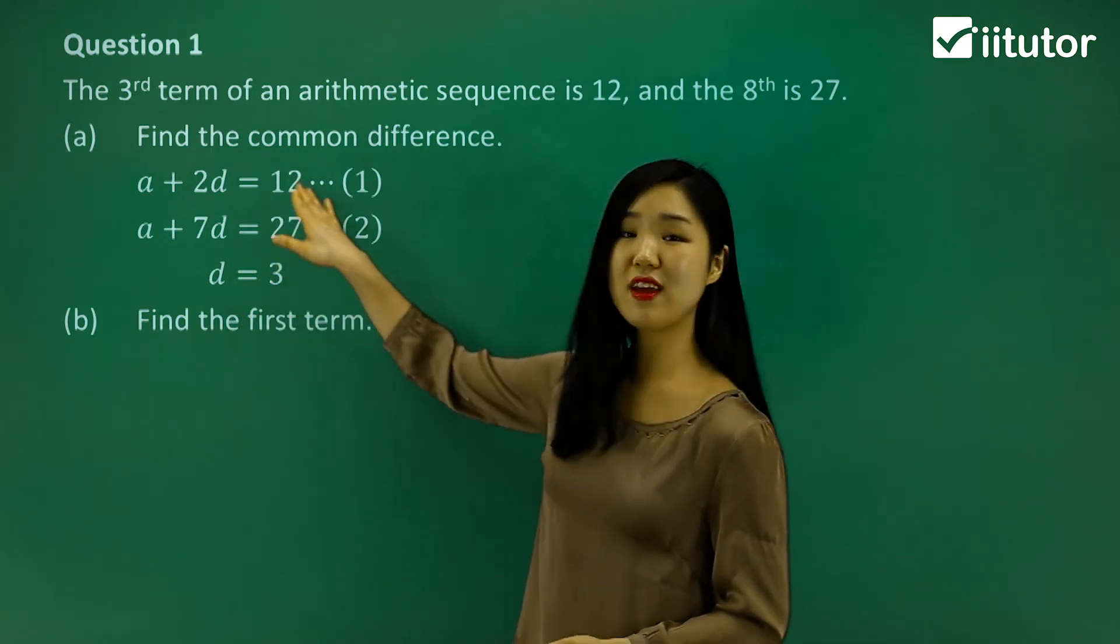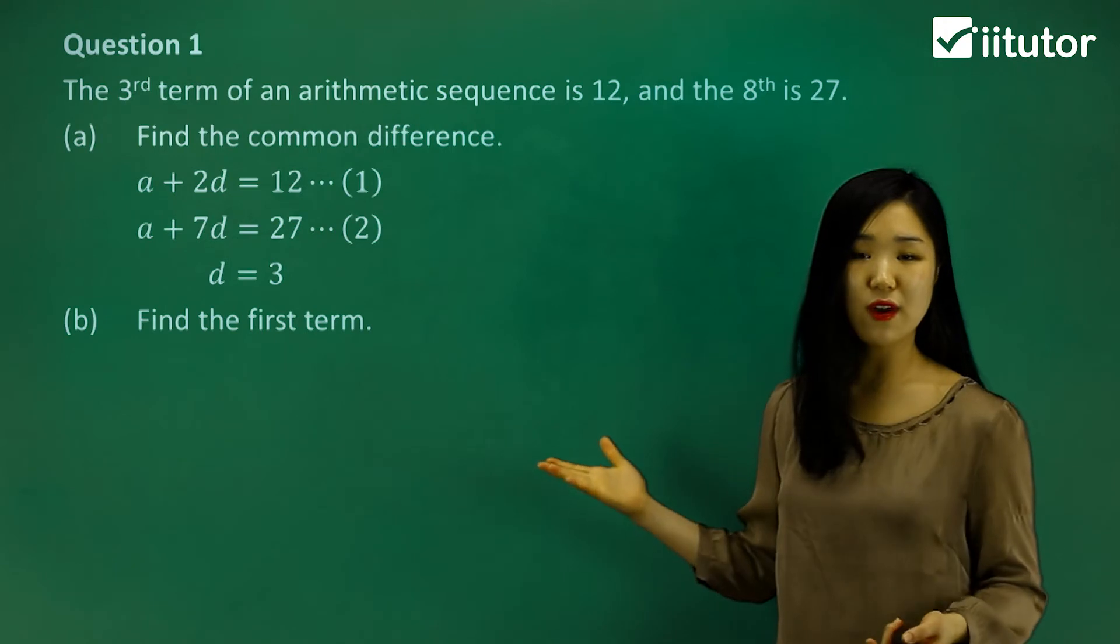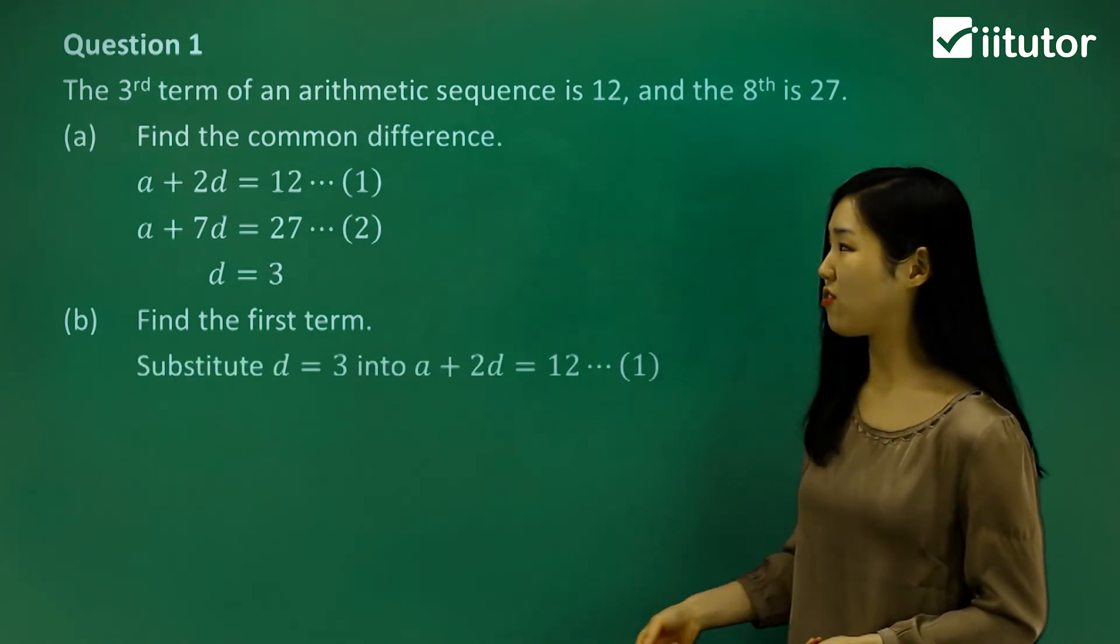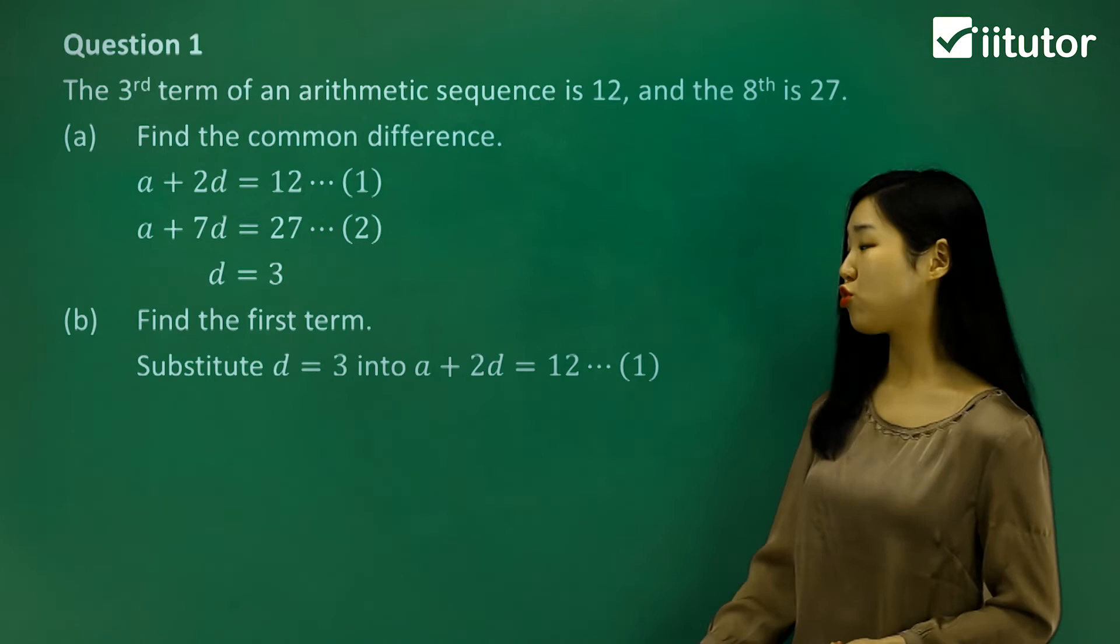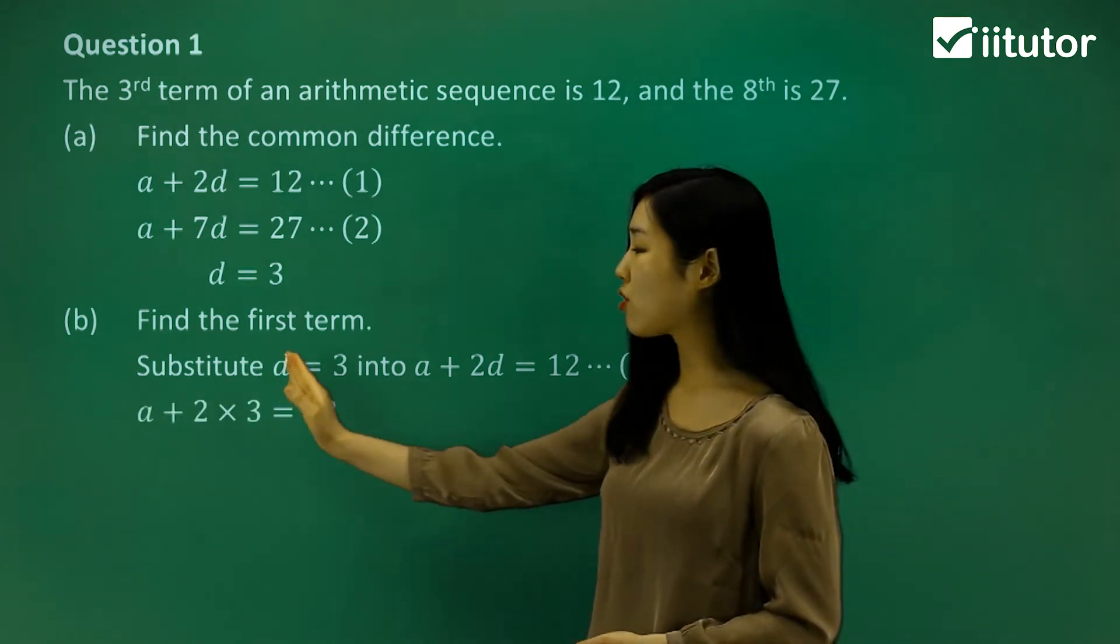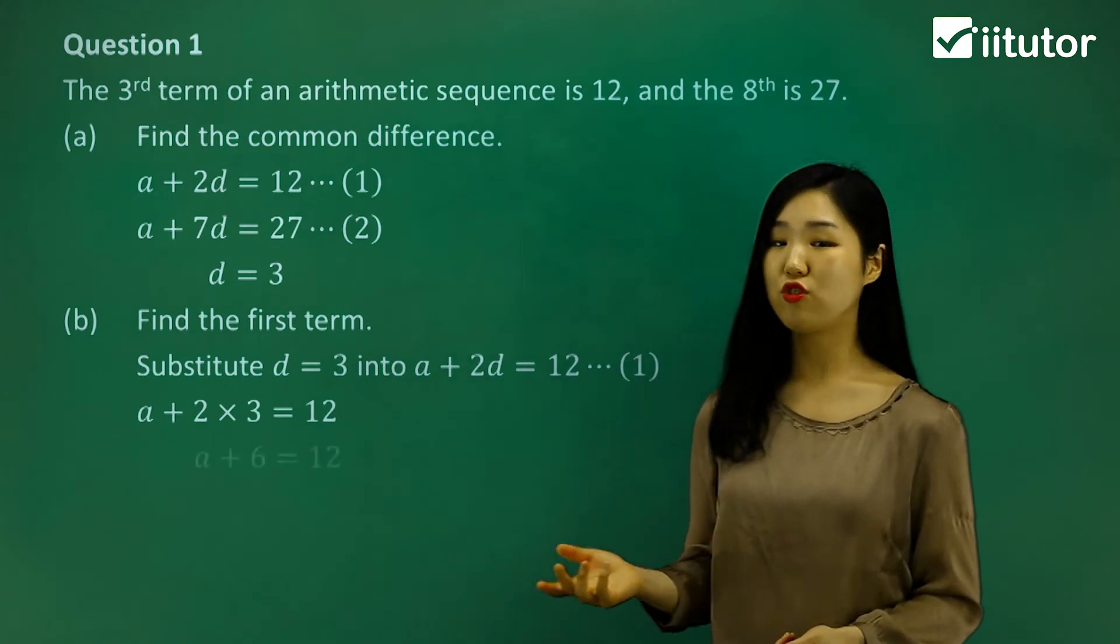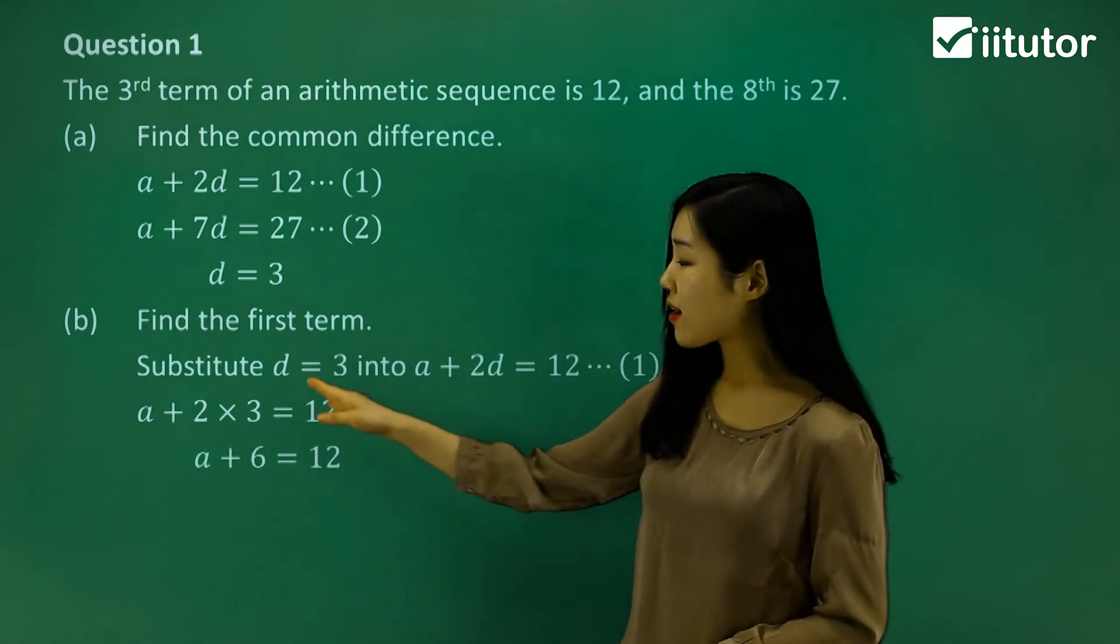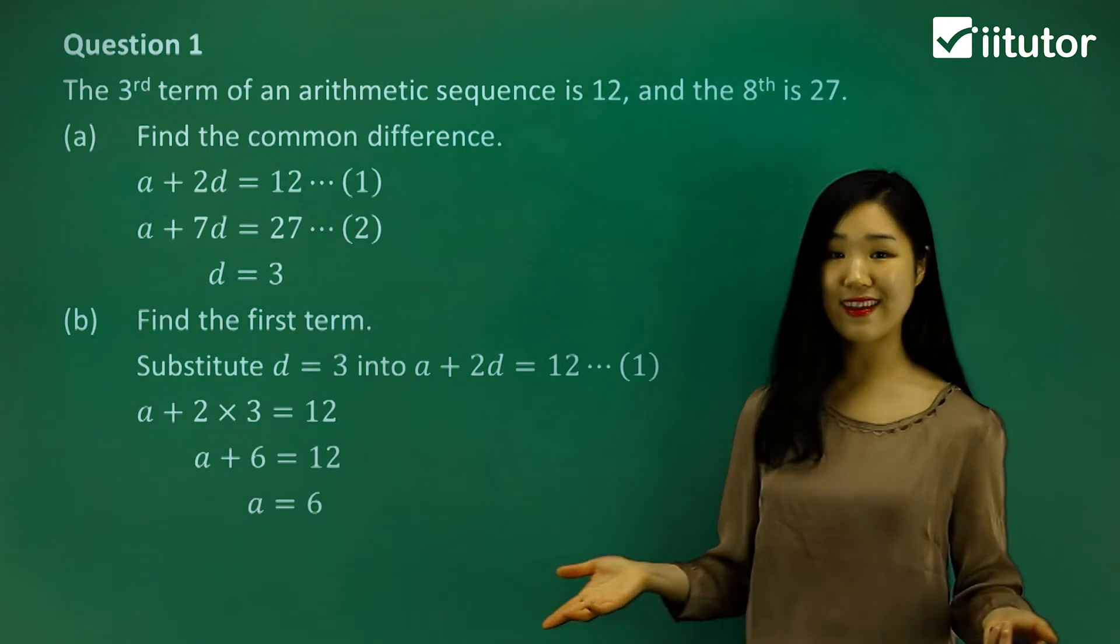To find a, put it into any of these two equations and solve for a. I'm just going to pick the first equation. If you put 3 into d like this, a plus 2 times 3 equals 12. 2 times 3 is 6. Subtract away the 6, so 12 minus 6 would be 6. So a equals 6. We found the first term.